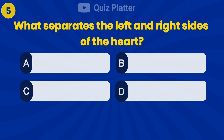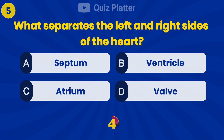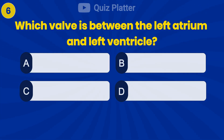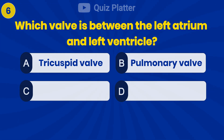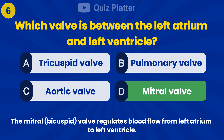What separates the left and right sides of the heart? Answer A: Septum. Which valve is between the left atrium and left ventricle? Answer D: Mitral valve.